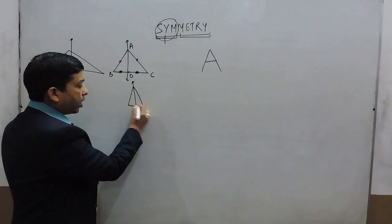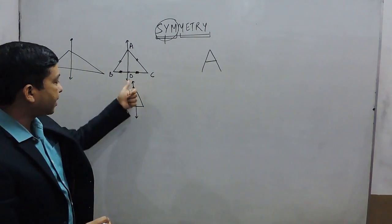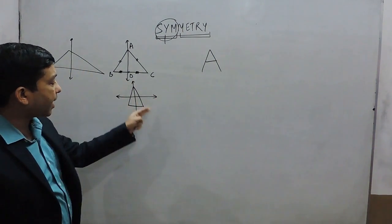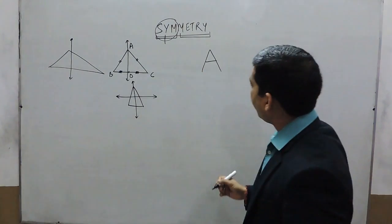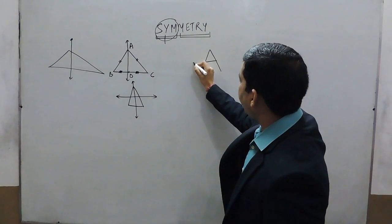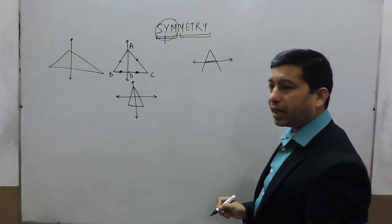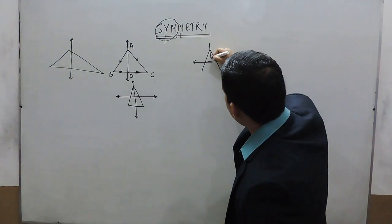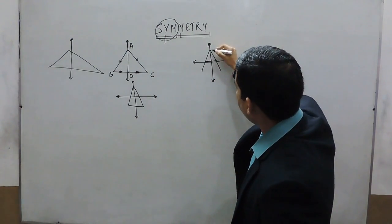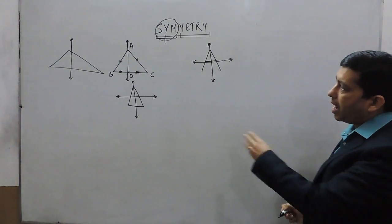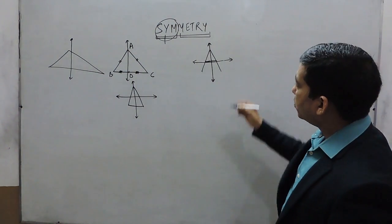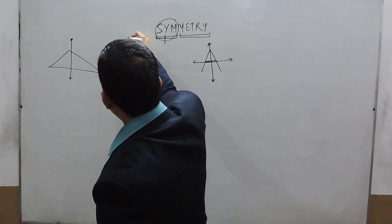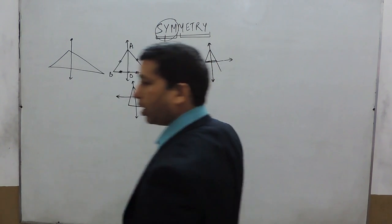This is known as the vertical axis. So if I take symmetry on the vertical axis, it is symmetrical. But if I put a line horizontally, then this triangle is not symmetrical. If I put a line horizontally, this is not the mirror image of these two sides. But if I put a line vertically, then this part and this part are mirror images of each other, which means they are symmetrical. So the alphabet A is symmetrical vertically, and the triangle is also symmetrical vertically.